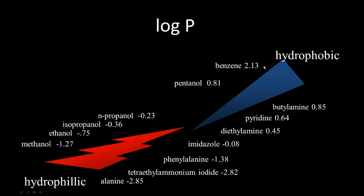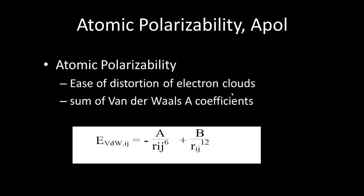Looking at log P values: very hydrophilic ones include methanol, isopropanol, ethanol, phenylalanine, imidazole, diethylamine. More hydrophobic and positive values include benzene and pentanol. Log P is very important because it tells you the solubility, the GI absorption, the hERG, the plasma binding, and the membrane penetration. So log P affects many different parameters.